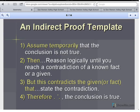Okay, so there's three or four basic steps of an indirect proof. And the first one, step one, is that we're going to assume temporarily that the conclusion that we want to prove is false. So, we want to temporarily assume that it is not true.